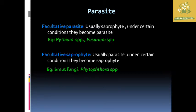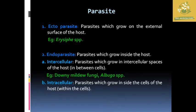Parasites can also be classified as facultative parasites or facultative saprophytes. Facultative parasites are usually saprophytic in nature but under some conditions are converted into a parasitic nature — examples include Pythium species and Fusarium species. Facultative saprophytes are usually parasitic in nature but during some conditions become saprophytes — examples include mud fungi and Phytophthora species.